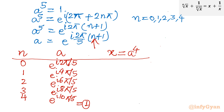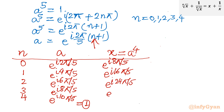Now finding x equal to a to the power 4 for each value. Multiplying exponents by 4: first value gives e^(i·8pi/5); second gives e^(i·16pi/5); third gives e^(i·24pi/5); fourth gives e^(i·32pi/5); and the last value gives e^(i·40pi/5), which is our real solution 1. The remaining four x values are complex and can be written in exponential form or expanded as cos theta plus i·sin theta.